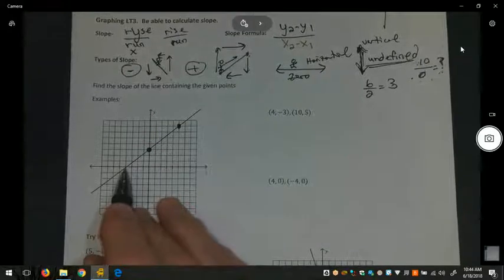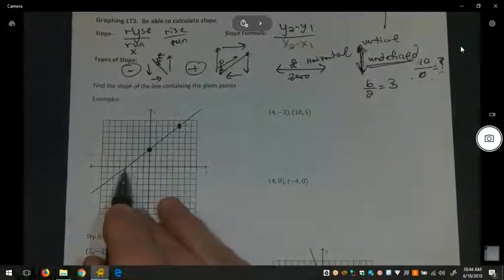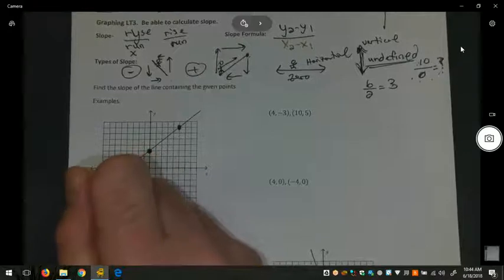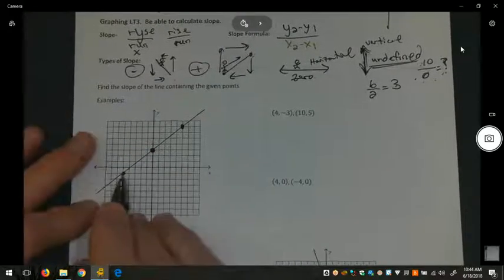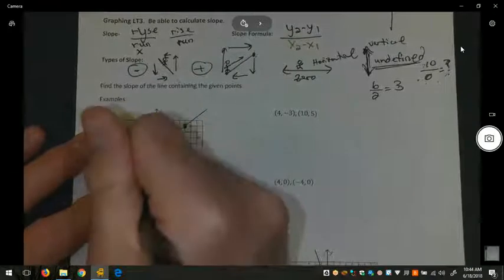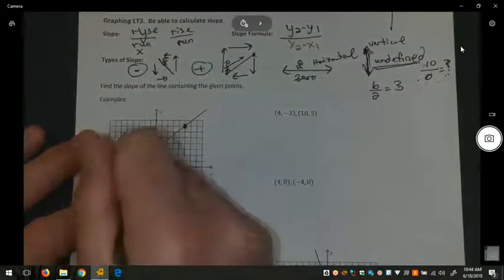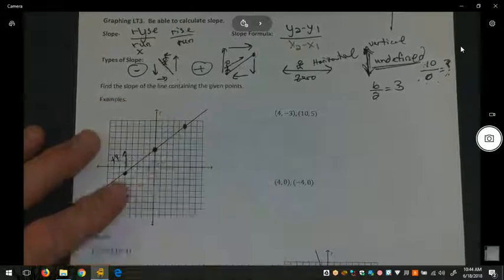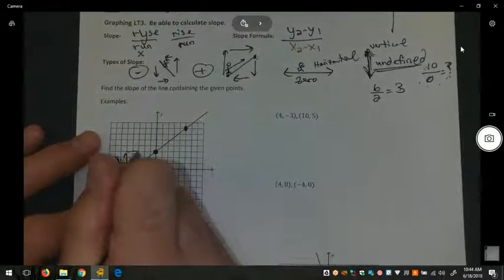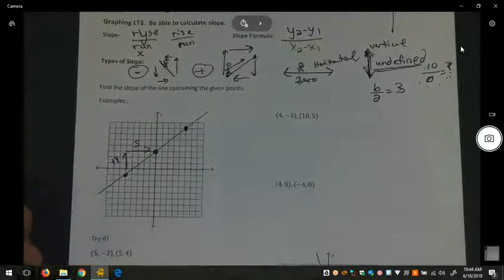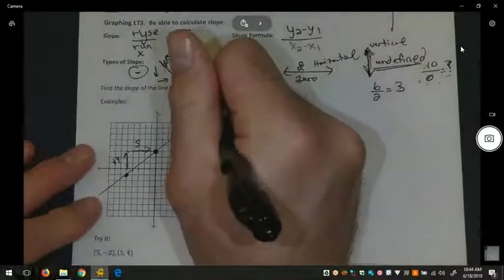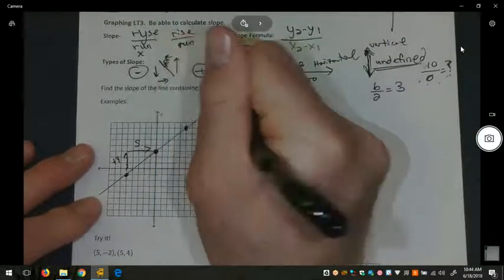It probably crosses here. Let's see if that's consistent. So if I start here on the left, I'd have to go up one, two, three, four. So I'd have to go up four and right one, two, three, four, five. Right five. So the rise is four and the run is five.